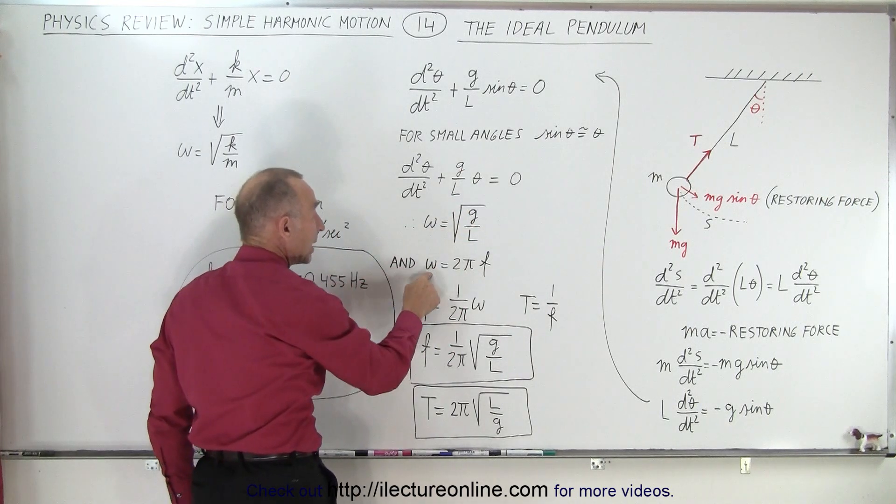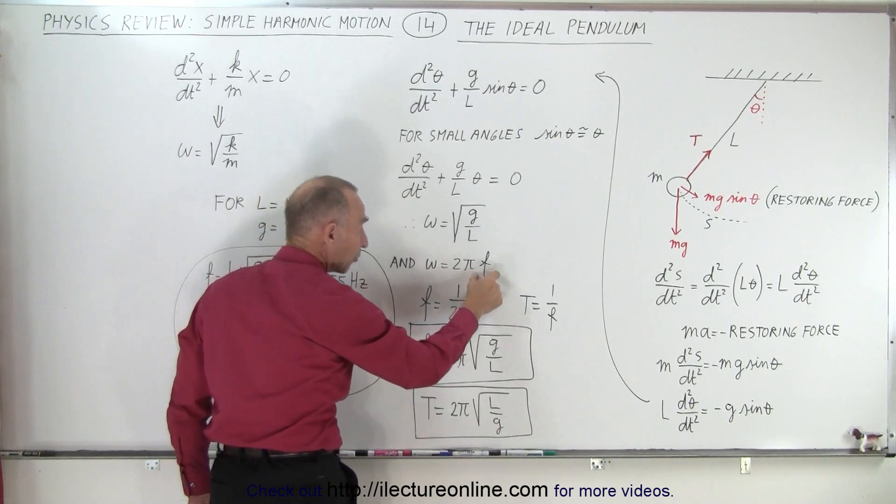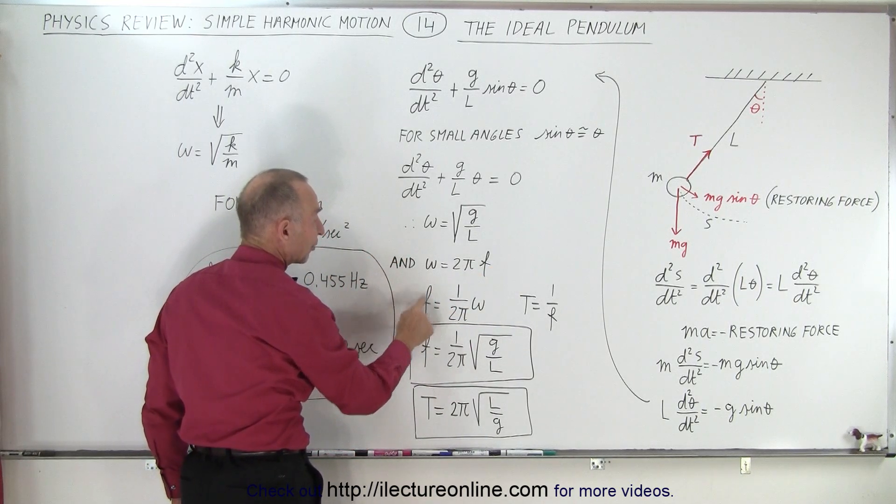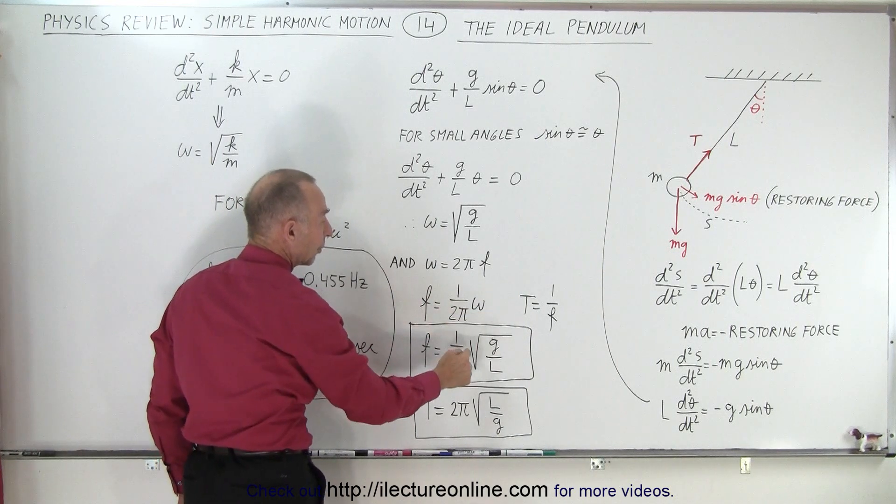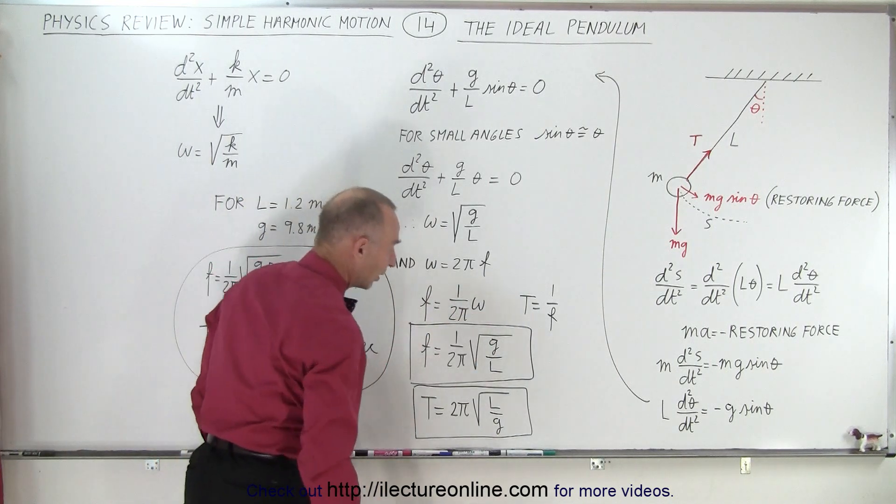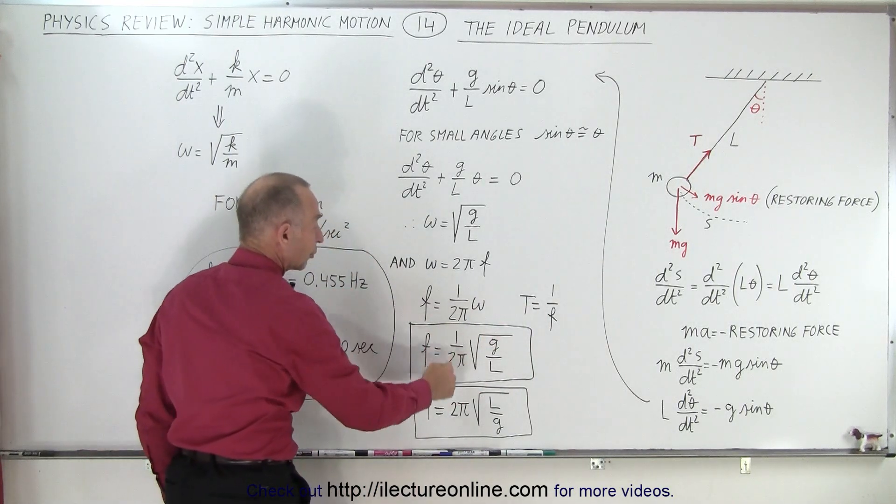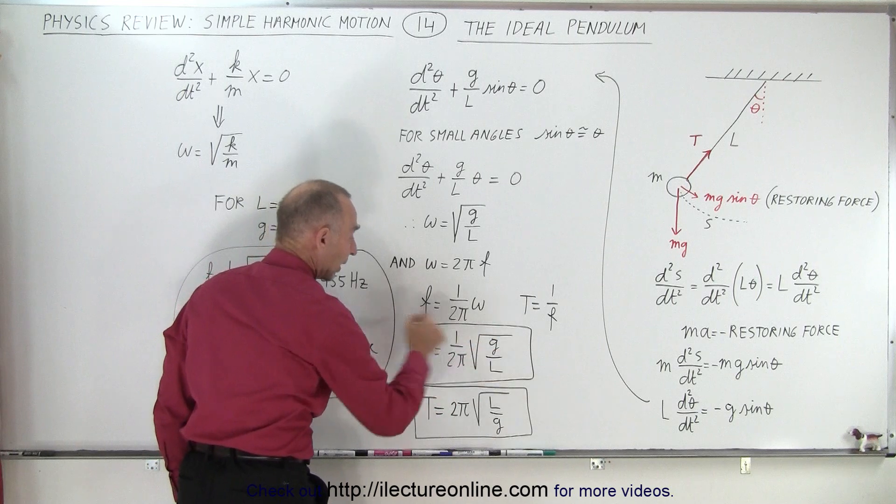Now, since omega, the angular frequency, is equal to 2 pi times the oscillatory frequency, we can solve for f, and now we can see that f is 1 over 2 pi times omega, where omega is equal to the square root of g over L. And so therefore, the oscillatory frequency of a pendulum is 1 over 2 pi times the square root of g over L.